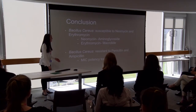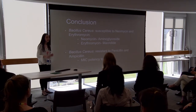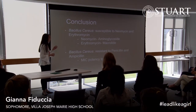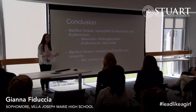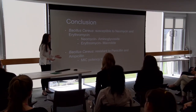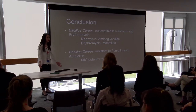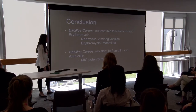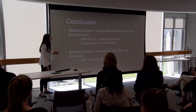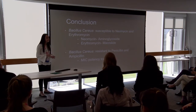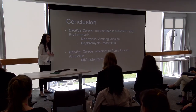To conclude: Bacillus cereus was susceptible to neomycin and erythromycin. I think this happened because neomycin is an aminoglycoside and erythromycin is a macrolide — they both bind to ribosomal subunits, blocking the ribosomal exit tunnel, so peptide bond formation doesn't happen and the cell wall breaks down. Since all cells, whether gram-positive or gram-negative, contain ribosomes, it worked. Bacillus cereus was resistant to penicillin and ampicillin, and I think this happened because the minimal inhibitory concentration potency was too small.